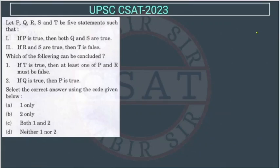Now see this question. This question is from reasoning. So let P, Q, R, S and T be five statements such that if P is true, it means both Q and S are true. So we can write it like this: if P is true then Q and S both are true.